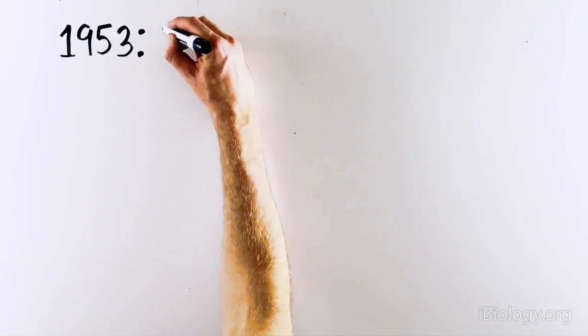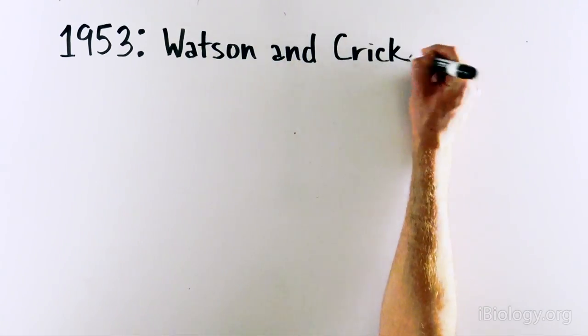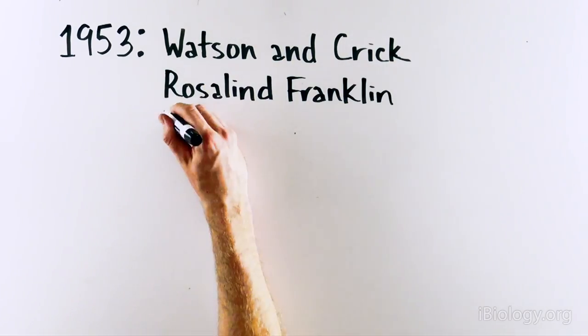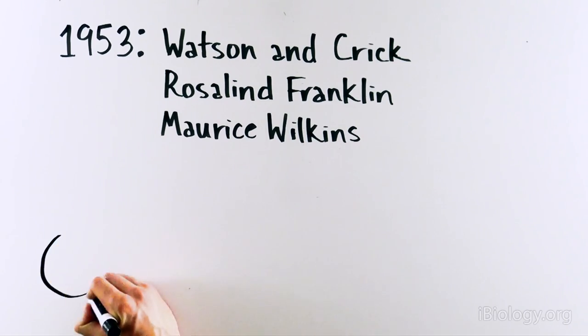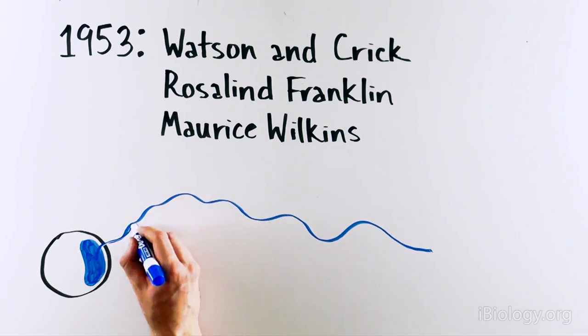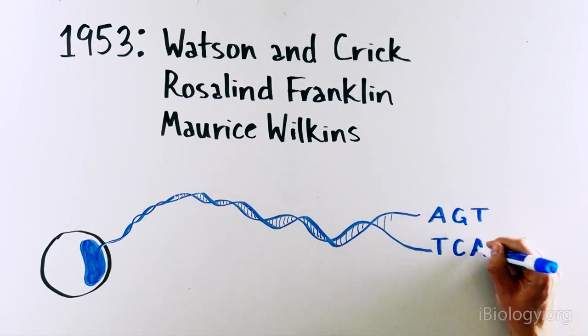Then in 1953 came Watson and Crick, who, with the help from colleagues Rosalind Franklin and Maurice Wilkins, discovered how the 6 billion base pairs that make up our genetic material are stored in the cell.